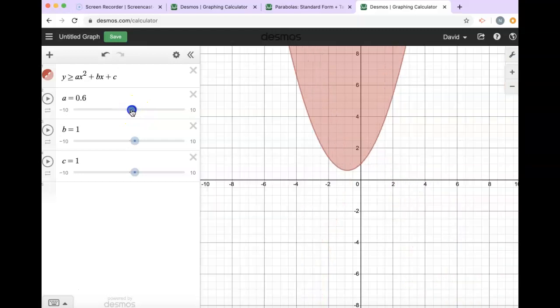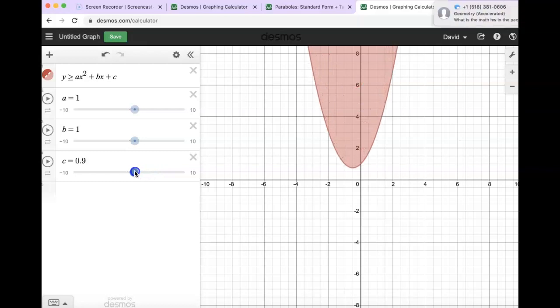That makes your parabola bigger or smaller and changes your shading. B is a more complicated shift—it's going to shift it kind of up and down and left and right. That's not really an algebra topic. And then your c value just moves it up and down like you have learned in class.